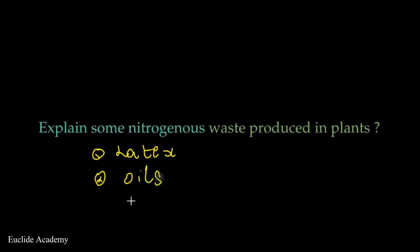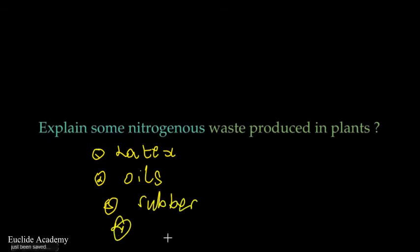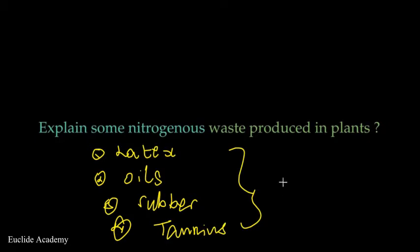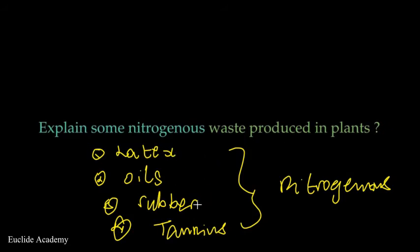Plants also produce nitrogenous waste through rubber, and number four, through tannins. So these are the ways in which plants produce nitrogenous waste: latex, oils, rubber, and tannins.